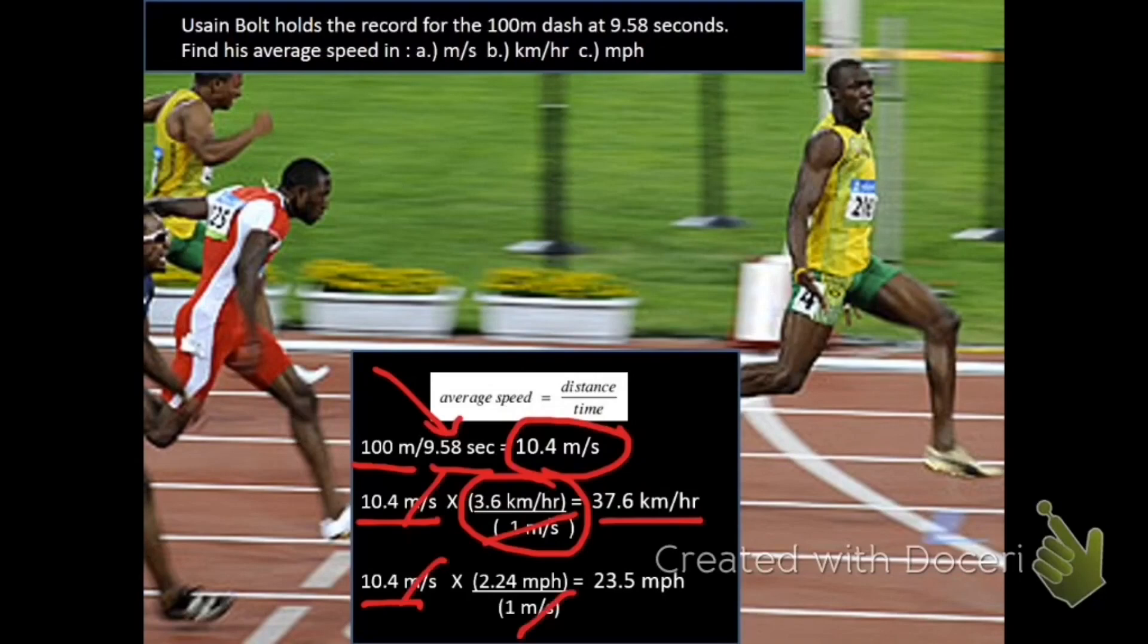I can also use a conversion factor from that previous slide to get me to miles per hour. Again, putting meters per second on the bottom so they cancel and getting miles per hour. It's actually a pretty impressive speed to think about, that his average speed was almost 24 miles per hour. And if you think about running a race, you have to start from a standstill, which means that he actually at some point was traveling zero miles per hour. So that means that if he was at some point traveling zero, at some other point he was actually traveling faster than 24 miles per hour, which is pretty impressive.